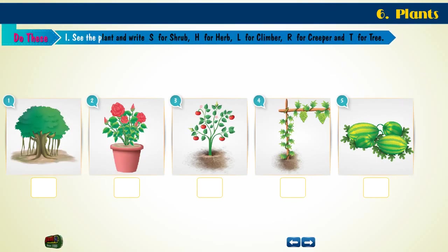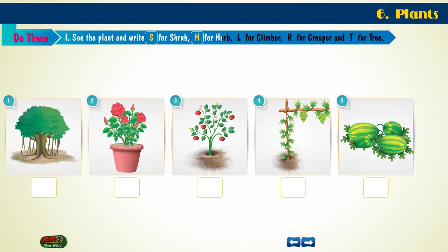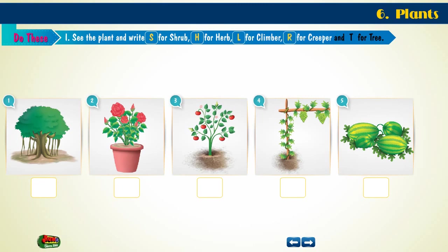See the plant and write S for Shrub, H for Herb, L for Climber, R for Creeper, and T for Tree.